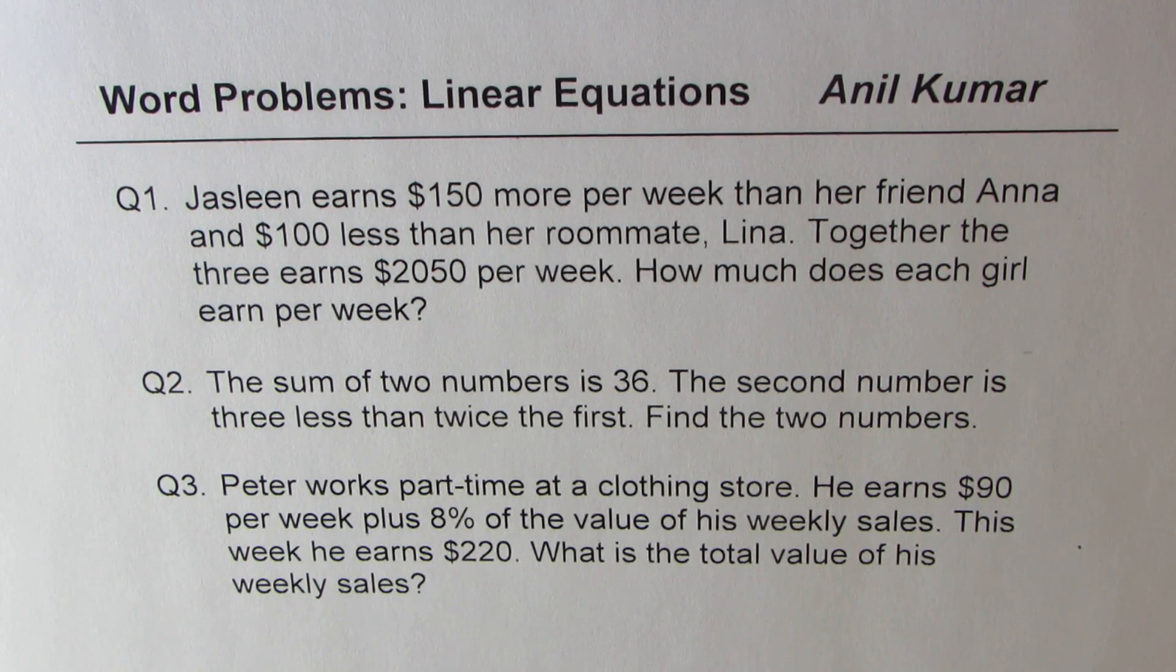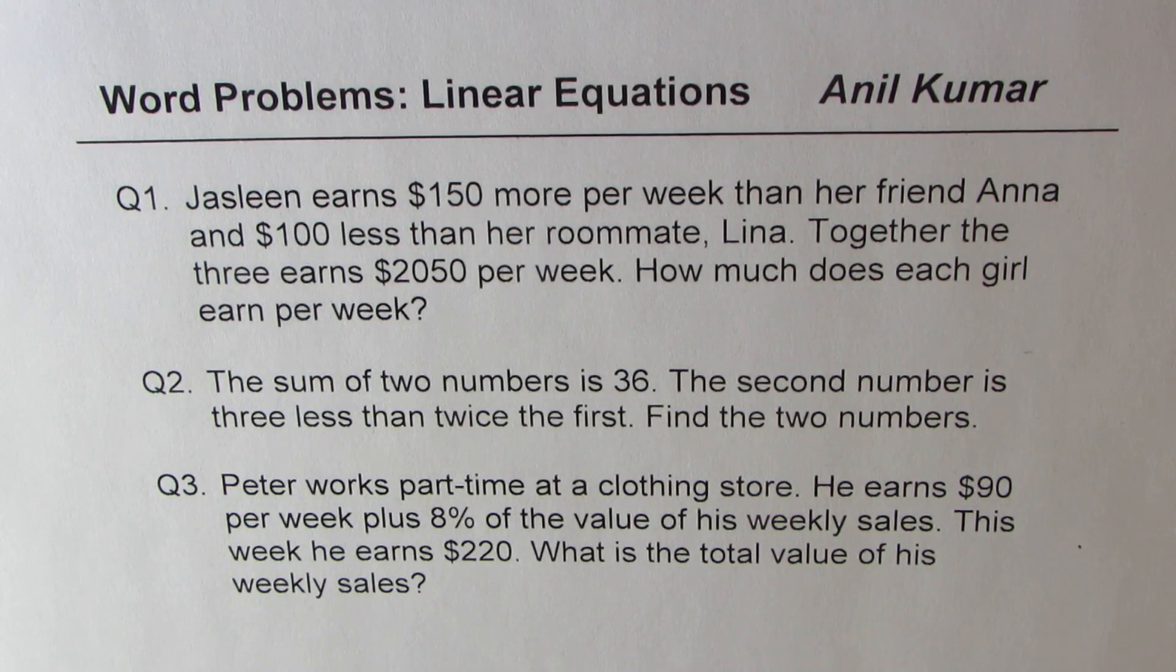The three questions are: Question number one, Jasleen earns $150 more per week than her friend Anna and $100 less than her roommate Lina. Together the three girls earn $2050 per week. How much does each girl earn per week?